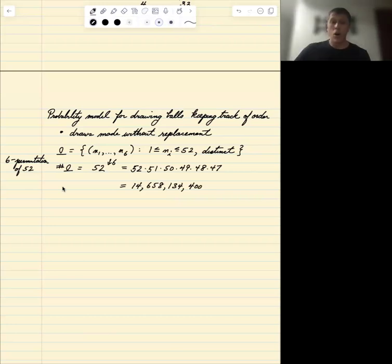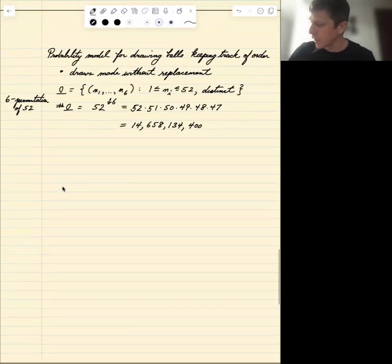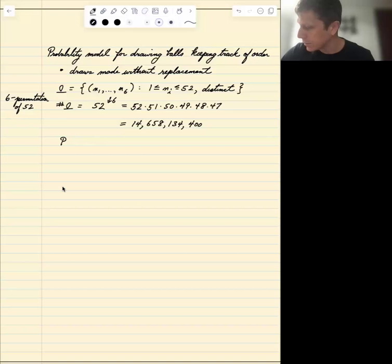We're going to assume that all possible, all possibilities are equally likely. So our probability model is uniform on omega, okay.